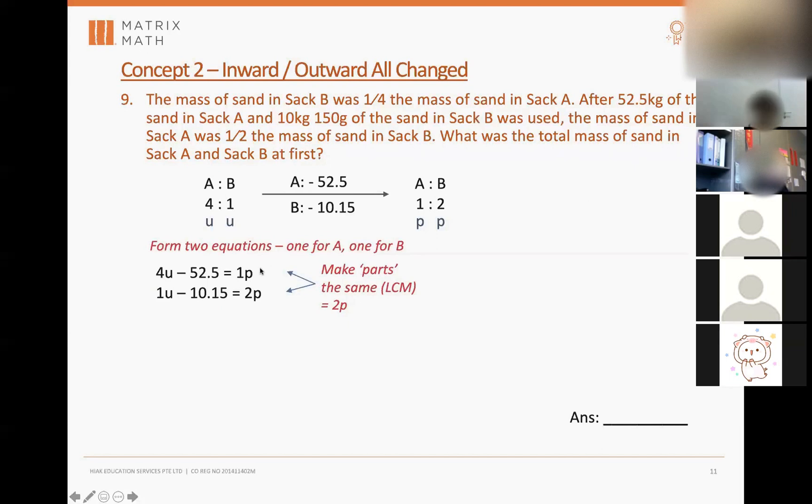The lowest common multiple of one and two will be two, so I multiply this by two. 4u times two I get 8u, 52.5 times two I get 105, one part times two I get two parts. So now you can see 1u minus 10.15 is equal to 8u minus 105.